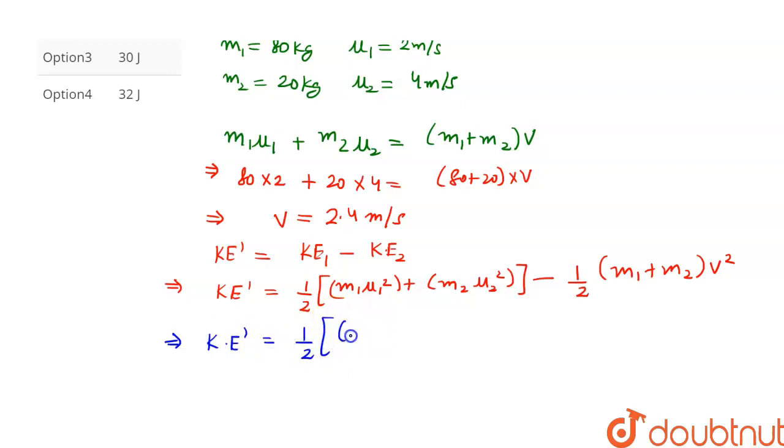So into m1 is 80 into 2 square plus m2 is 20 into 4 square minus 1 by 2, 80 plus 20 into 2.4 square.